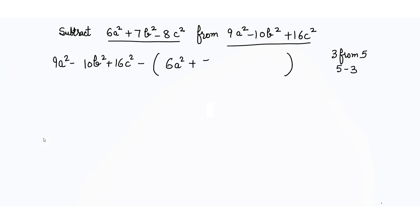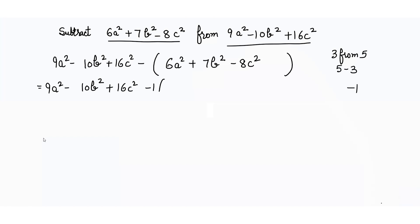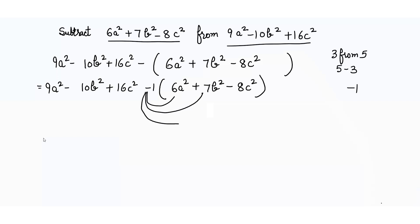Plus 7b² - 8c². Whenever we subtract algebraic expressions, we put a negative sign before the bracket. A negative sign outside the bracket means negative 1. So we can write this equation as: 9a² - 10b² + 16c² - 1 × (6a² + 7b² - 8c²).